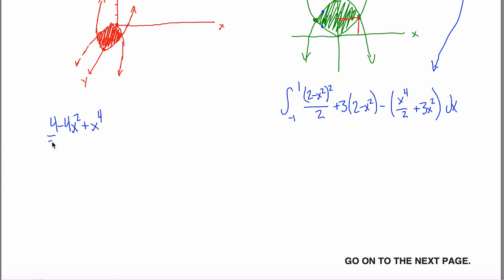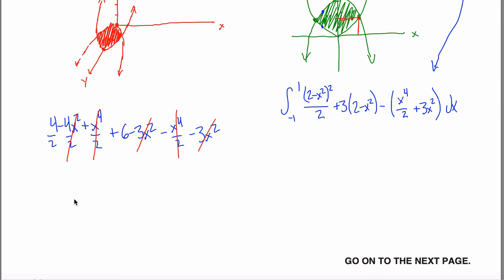So the full expression is (4 minus 4x² plus x⁴)/2 plus 6 minus 3x², minus x⁴/2 minus 3x². Let's see how this cleans up. The x⁴/2 and minus x⁴/2 cancel each other. For the x² terms: 2 from the first part, 3 more, and 3 more — all negative — gives negative 8x². For constants I get 2 plus 6 equals 8. So the integrand simplifies to the integral from negative 1 to 1 of negative 8x² plus 8 dx.